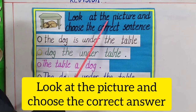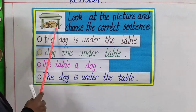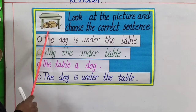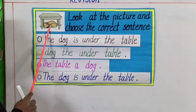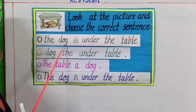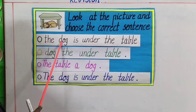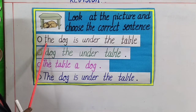Moving on children, our next topic is: look at the picture and choose the correct sentence. Here you can see one picture. Observe the picture nicely — what can you see? One table, and the dog is under the table. So let's choose the correct sentence for this. First line: the dog is under the table. Is this a correct sentence?